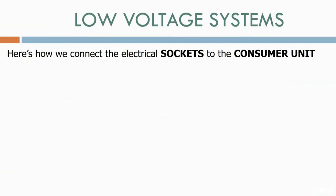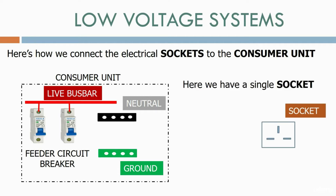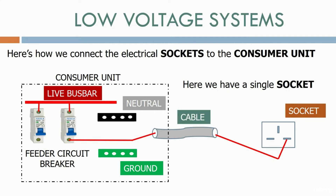Here's how we connect the electrical sockets to the consumer unit. We have the consumer unit with feeder circuit breakers, a neutral terminal strip, a ground terminal strip, and a live bus bar. Here we have a single socket — a three-pin socket with a live, neutral, and ground. Firstly, we connect the live feed from the circuit breaker through the cable onto the socket, then the neutral feed from the neutral terminal strip, and finally the ground wire from the ground terminal strip.